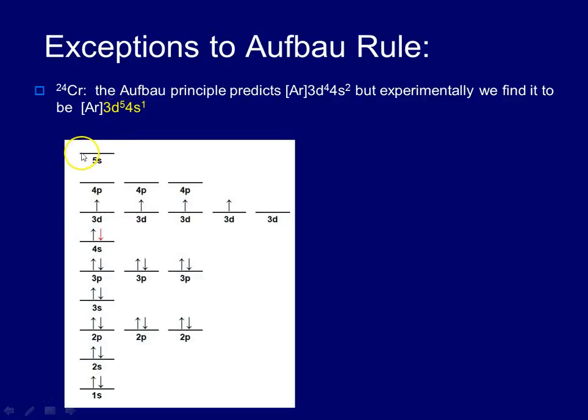So I have here an illustration. And what I've done is I've given you what the Aufbau would predict. And you'll notice that the Aufbau predicts that you would have a 4s² and that you would have this empty fifth D orbital.